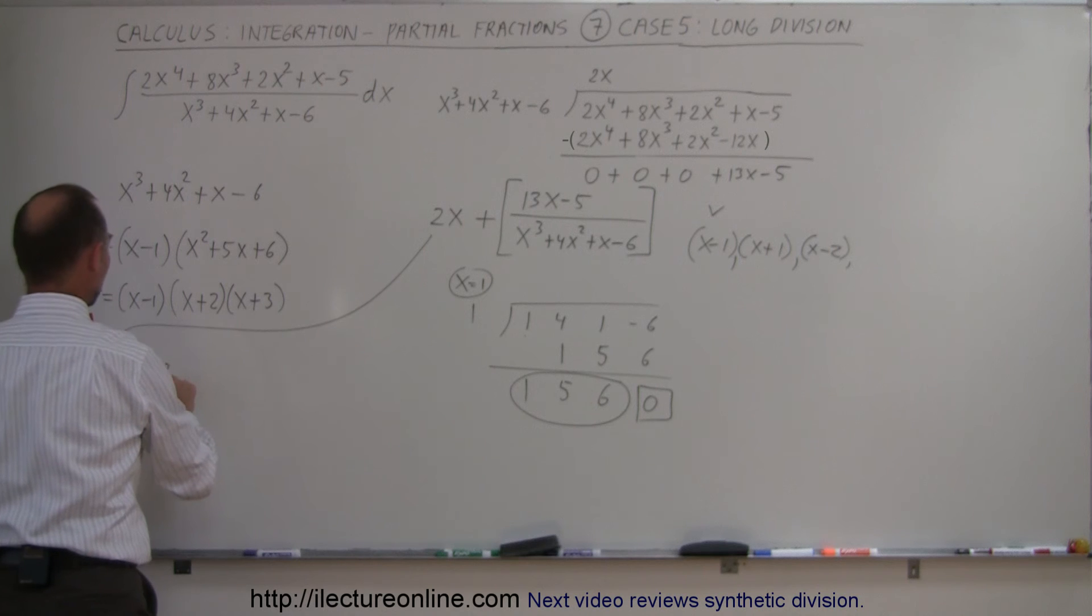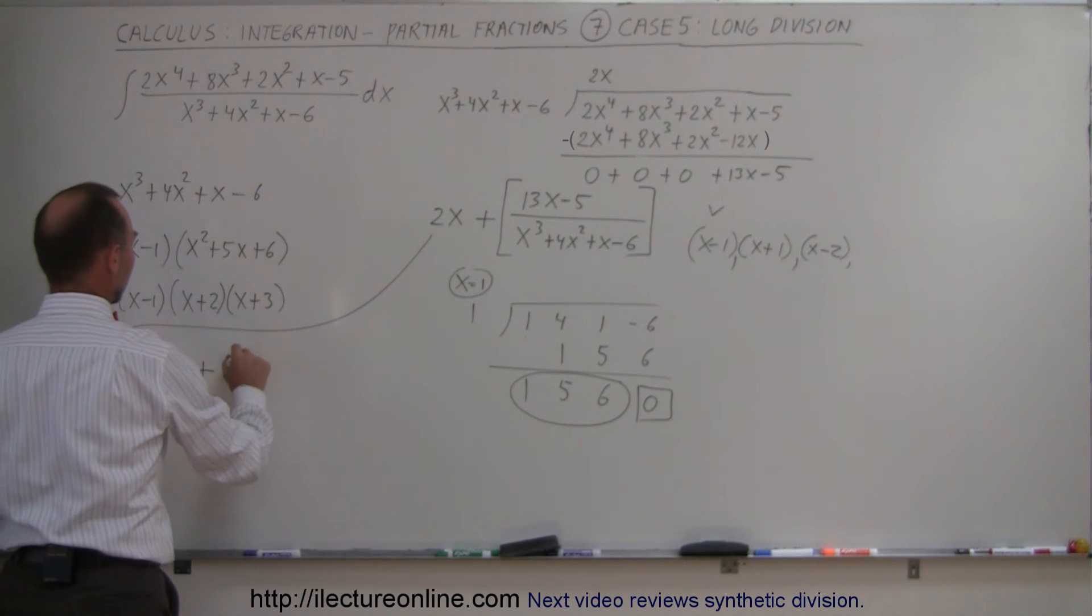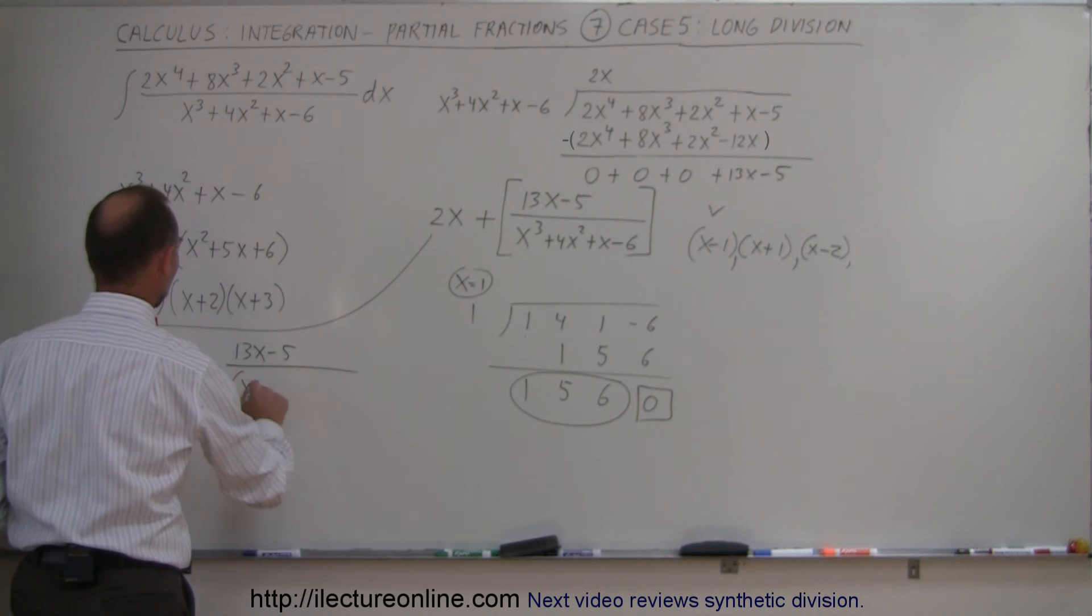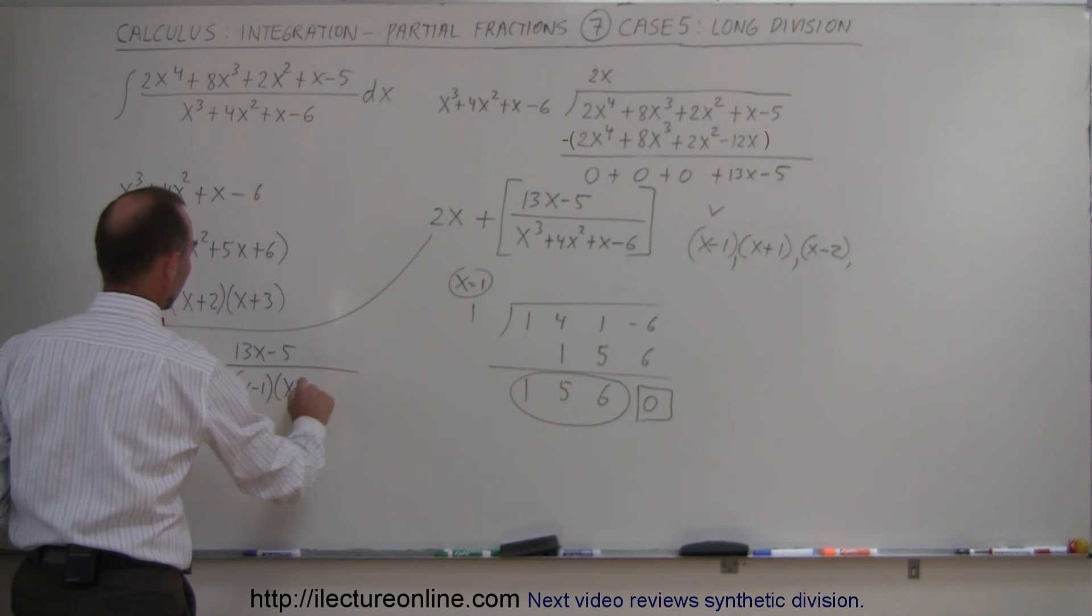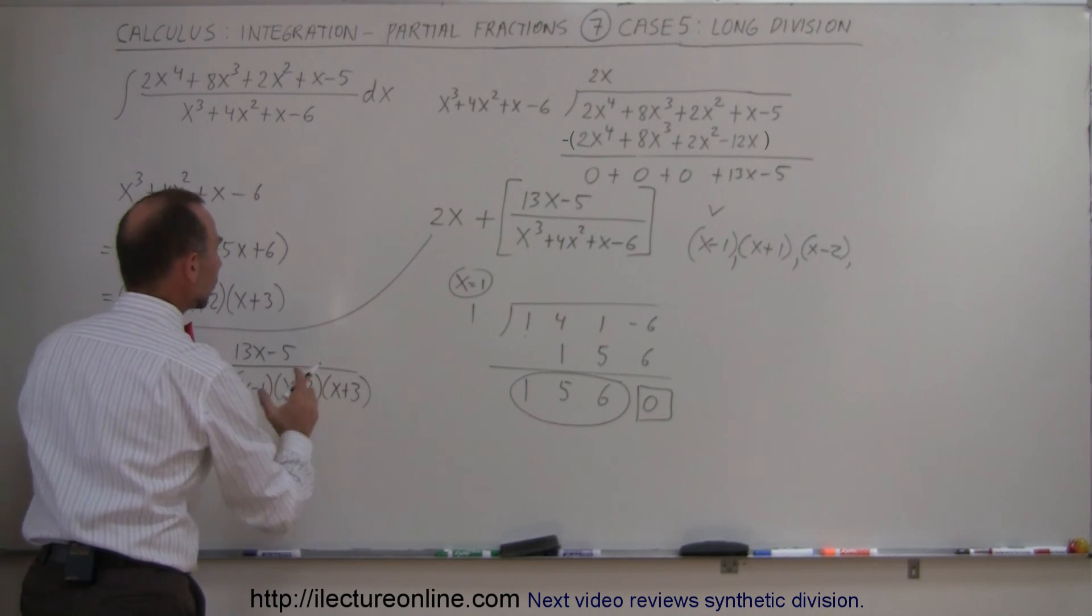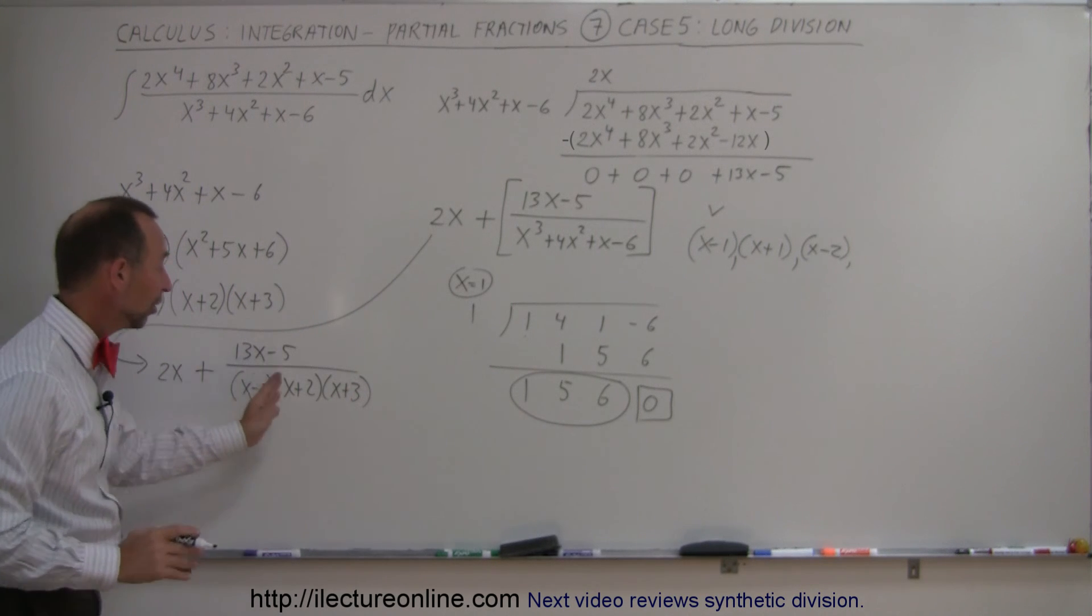Write as follows. You can write as 2x plus 13x minus 5 divided by the three factors, which are x minus 1 times x plus 2 times x plus 3. And now you're going to use the technique of partial fractions on this portion right here.